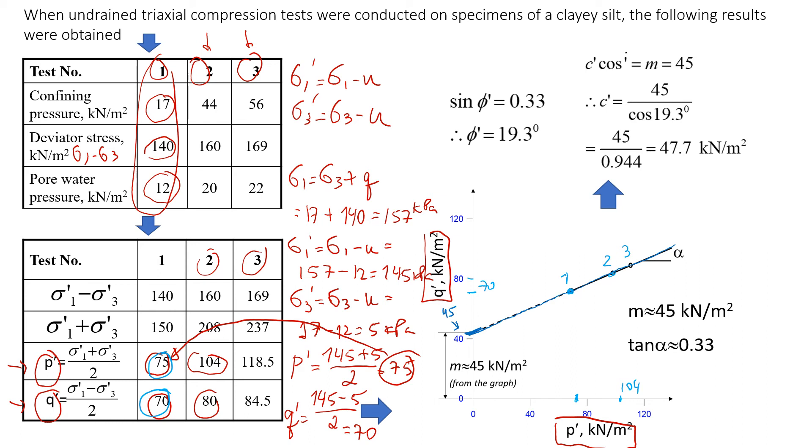Many students make mistakes. They think that this value 45 is cohesion, but it's not cohesion. This is what we call m. Remember that it's not cohesion. It's very close in terms of value to cohesion, but we call it m.